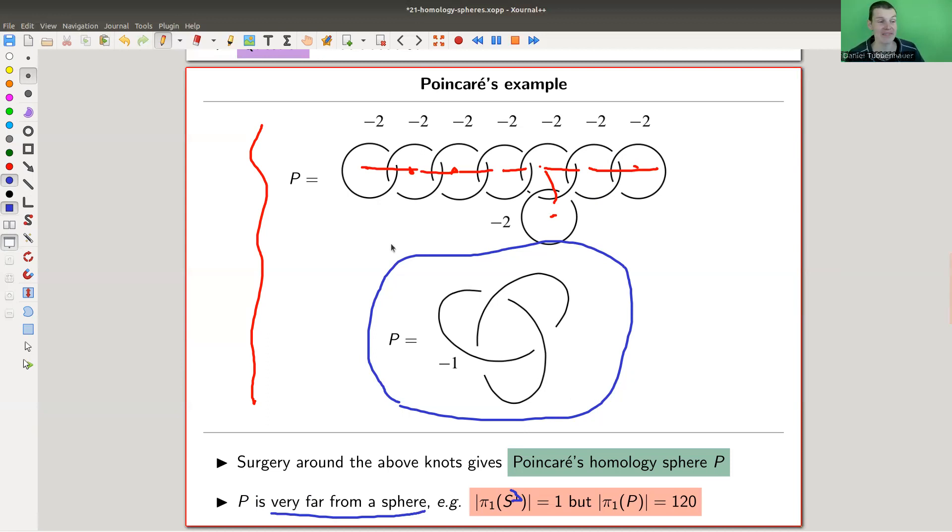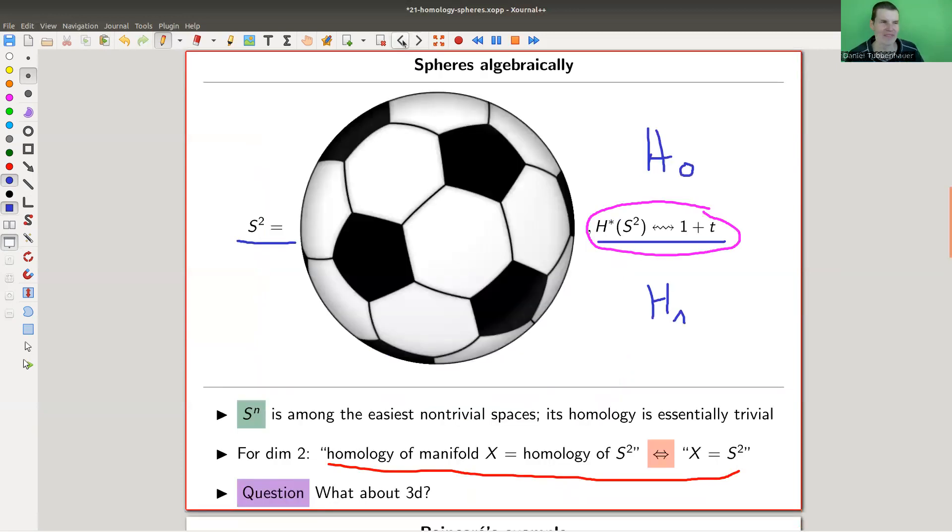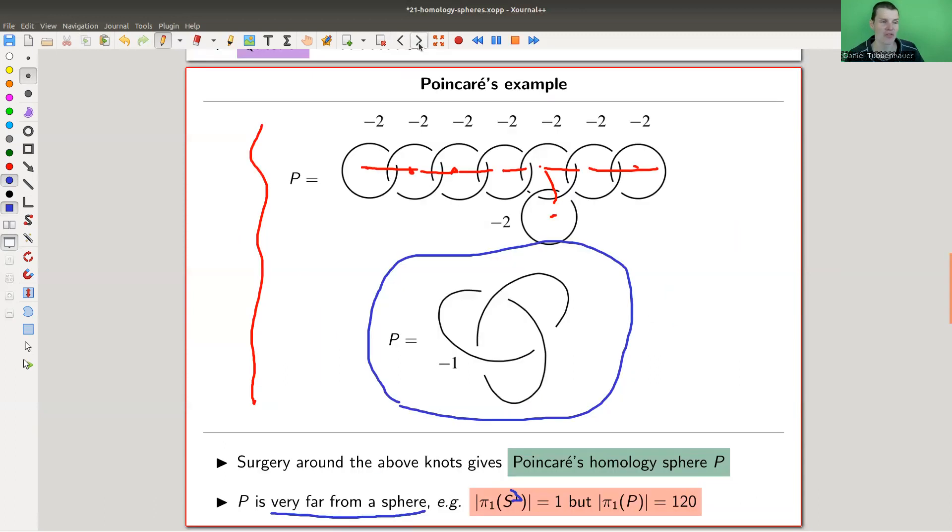Anyway, so those beasts exist. And if it goes wrong with dimension three, it certainly goes wrong everywhere else, essentially. So dimension two is kind of this coincidence where it still works out pretty well. So for completeness, here's a statement.